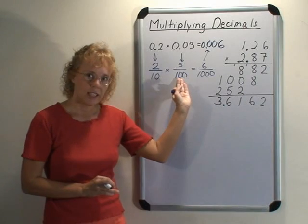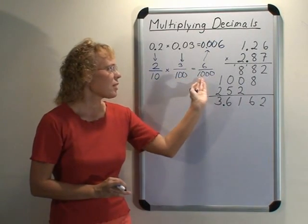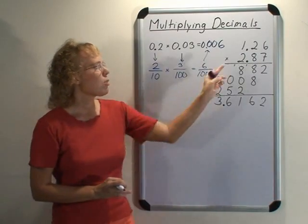One zero here, two zeros here, and then when you multiply ten and hundred you have to put three zeros here. And let's look at this one too.